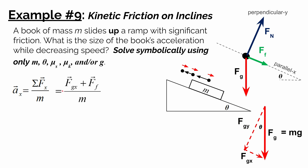We add together the x component of gravity and the frictional force, then divide by mass. In symbolic problem solving, we decide the signs based on direction rather than using vector notation. Both fgx and the force of friction are in the positive x direction, so we write positive fgx plus positive force of friction divided by mass, assuming positive values are plugged in.